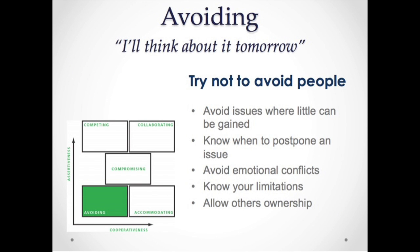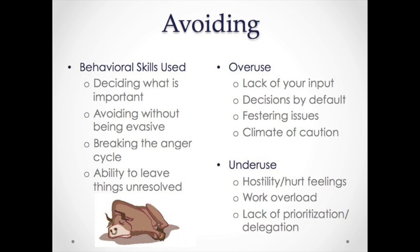The avoiding style of conflict management can be characterized as 'I'll think about it tomorrow.' Believe it or not, it can be useful in some situations. However, try not to avoid people — avoid issues where little can be gained. Know when to postpone an issue. Avoid emotional conflicts. Know your own limitations and allow others some ownership. Behavioral skills include deciding what is important, avoiding without being evasive, breaking the anger cycle, and utilizing the ability to leave things unresolved. Overuse can lead to lack of your own input, making decisions by default, festering issues, and a climate of caution. Underuse could lead to hostility or hurt feelings, work overload, and a lack of prioritization or delegation.